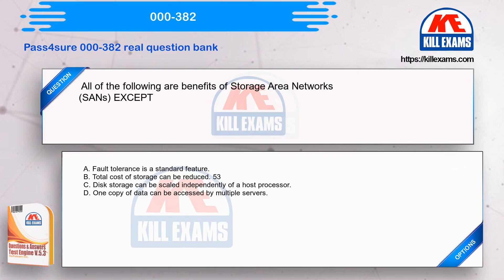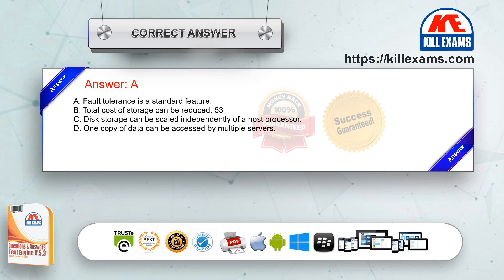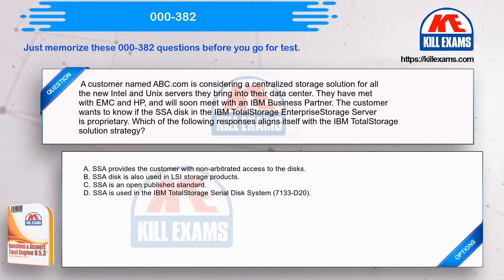All of the following are benefits of storage area networks (SANs) EXCEPT: Option A - fault tolerance is a standard feature; Option B - total cost of storage can be reduced; Option C - disk storage can be scaled independently of a host processor; Option D - one copy of data can be accessed by multiple servers. The correct answer is Option A.